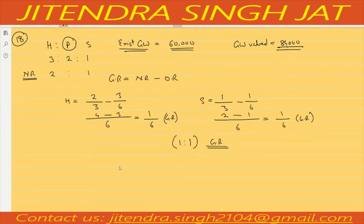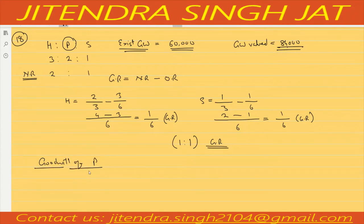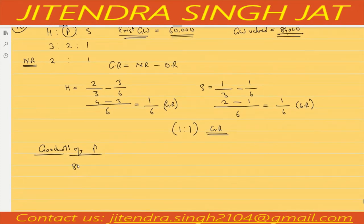Now we need to calculate the goodwill of Paymi. In 84,000, Paymi's share is 2/6. So 84,000 divided by 3 equals 28,000. Who will give this 28,000 to P? H and S will give in ratio 1:1, meaning 14,000 each.